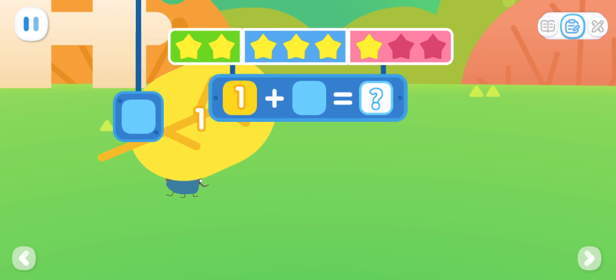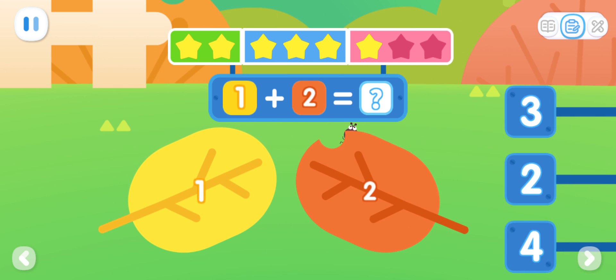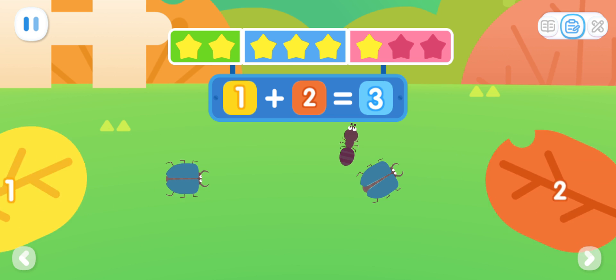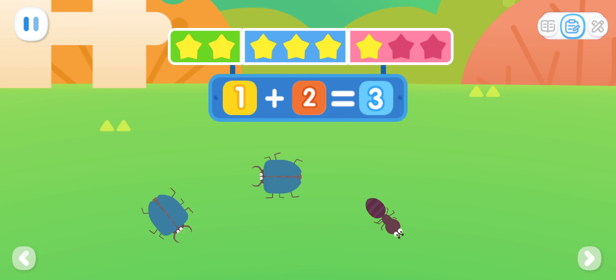There is one insect under the yellow leaf. There are two insects under the orange leaf. How many insects are there in total? You've got it! One plus two equals three.